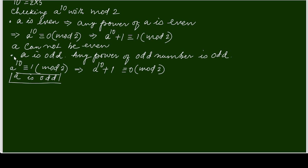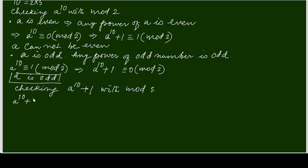Now checking with modulo 5. We need a to the power 10 plus 1 to be congruent to 0 modulo 5 since it is divisible by 10. That means a to the power 10 is congruent to negative 1 modulo 5, which is congruent to 4 modulo 5.